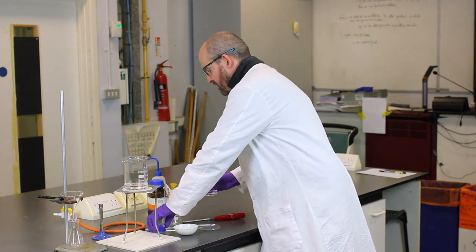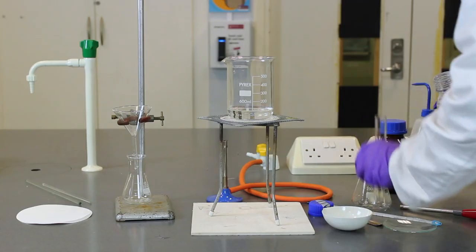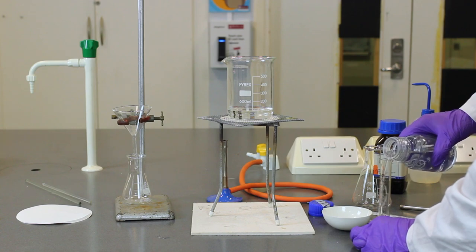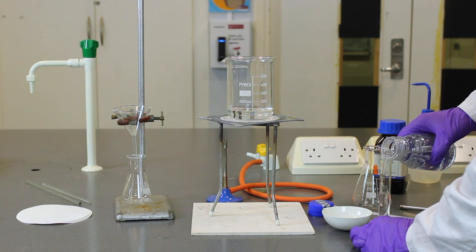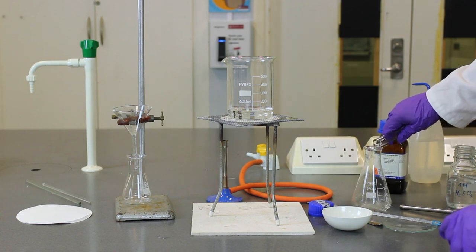So I'm going to take 25 centimetres cubed four times in this 25 centimetre cubed volumetric flask. So it's one molar acid, one mole per centimetre cubed acid. So it's reasonably strong, so that's why I'm wearing laboratory gloves.